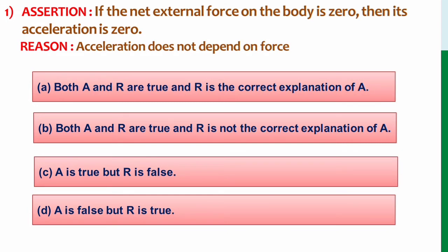So let's move on to the first question. Assertion: if the net external force on the body is zero, then its acceleration is zero. Reason: acceleration does not depend on force.